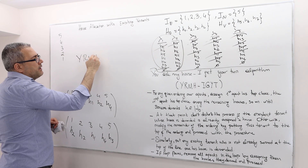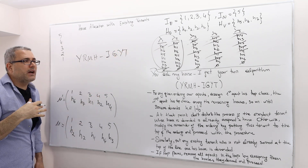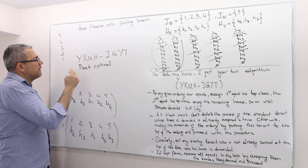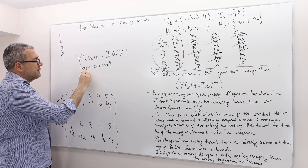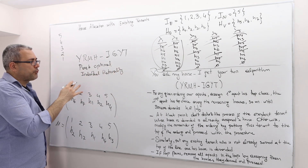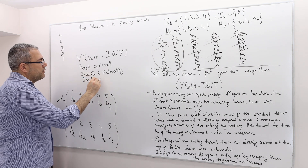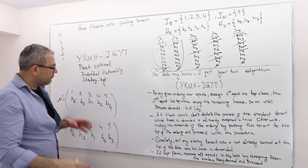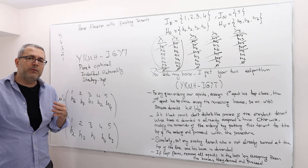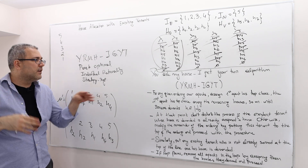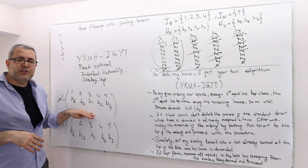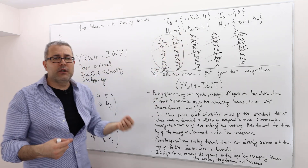The YRMH-IGYT mechanism is always Pareto-optimal and satisfies individual rationality. Whatever the ranking, the outcome is Pareto-optimal — you can't improve everyone's outcome without hurting someone. It's individually rational, meaning nobody ends up worse off than their initial house.